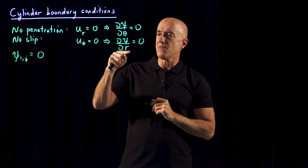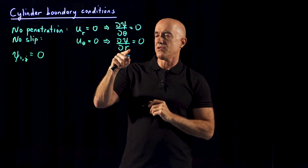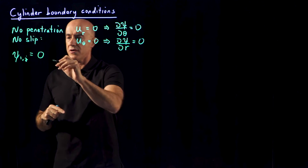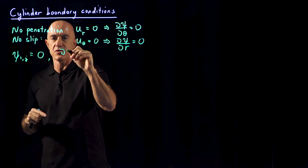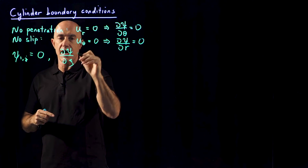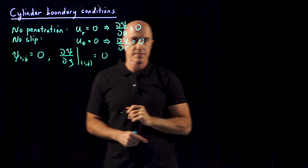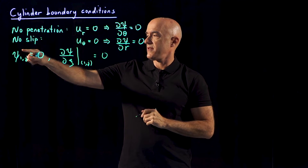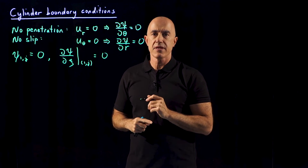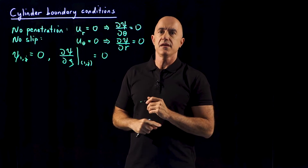The second condition is that the normal derivative of psi equals zero, meaning the partial derivative of psi with respect to our modified coordinate, evaluated at the 1j grid point, also has to be zero. So now we have a boundary condition on psi on the cylinder and a boundary condition on the normal derivative of psi. What we really need is a boundary condition on psi and a boundary condition on the vorticity on the cylinder.